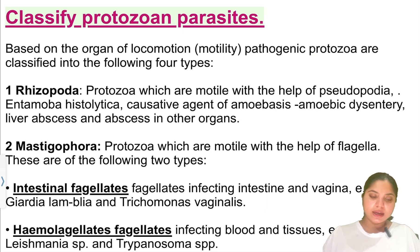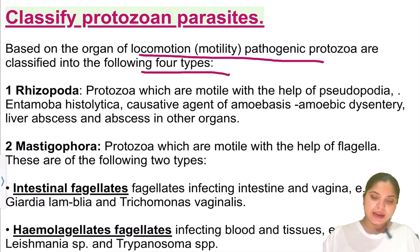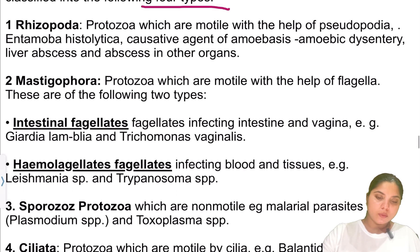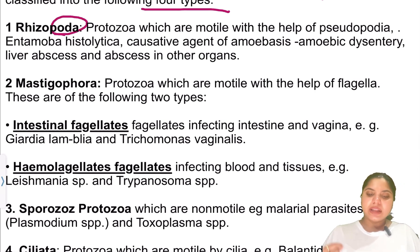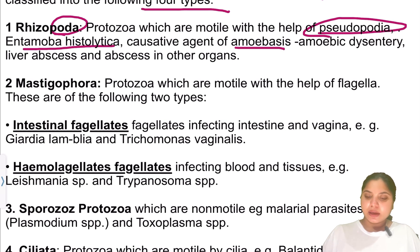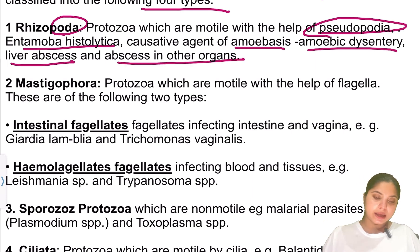Protozoa parasites are classified into four types based on their motility. The first is Rhizopoda — protozoa which are motile with the help of pseudopodia. An example is Entamoeba histolytica, which causes amoebiasis, amoebic dysentery, liver abscesses, and abscesses in other organs.